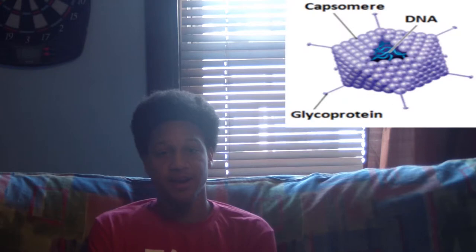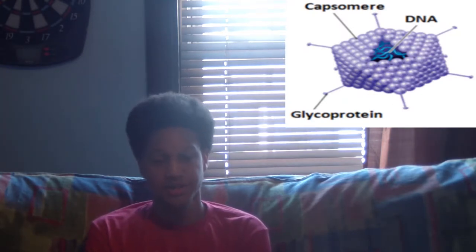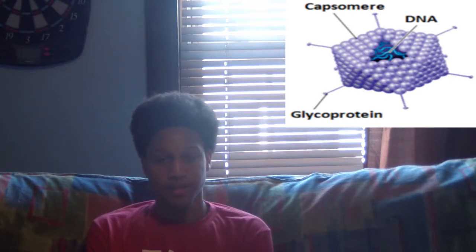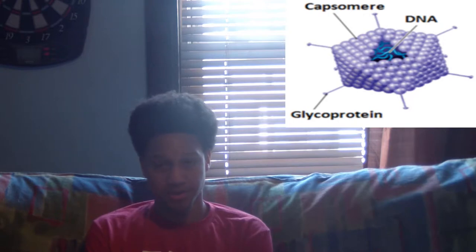The other type of shape is an icosahedron. In this shape, while it appears to be a sphere, it is actually 20 faces on the surface creating this sphere-like shape. Each of the triangles on the icosahedron is made of at least three capsomere subunits.